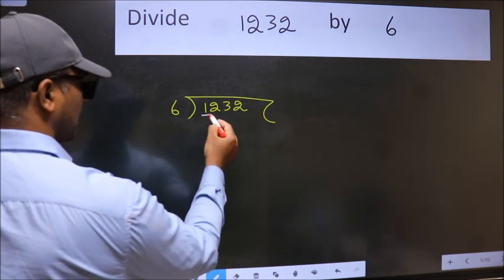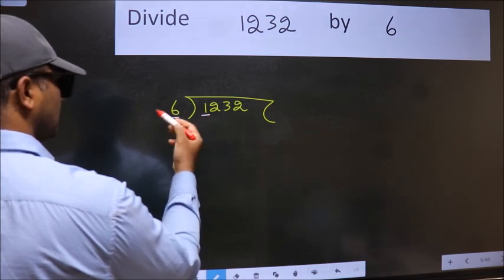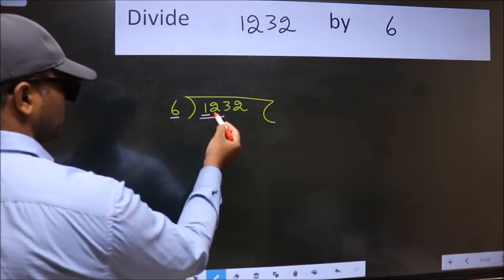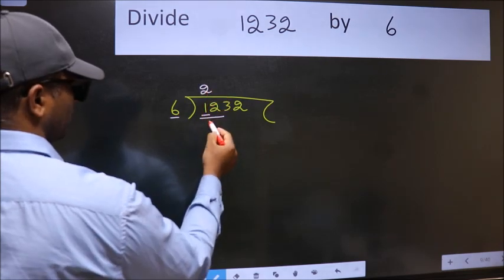Here we have 1 and here 6. 1 is smaller than 6. So we should take 2 numbers: 12. When do we get 12 in 6 table? 6 twos, 12.